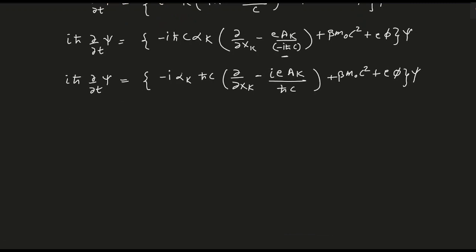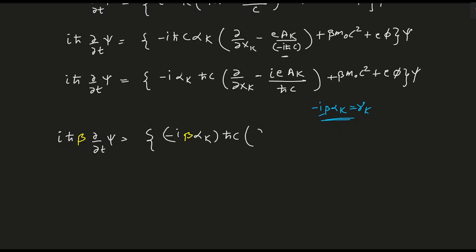This reminds us of the Dirac gamma matrices. We know that minus i beta alpha_k equals gamma_k, so we need an extra beta. We multiply the whole equation by beta, giving: i h-bar beta del/del t psi equals minus i beta alpha_k times [h-bar c del/del x_k minus ie A_k/(h-bar c)] plus beta m_0 c squared plus e phi, times psi.